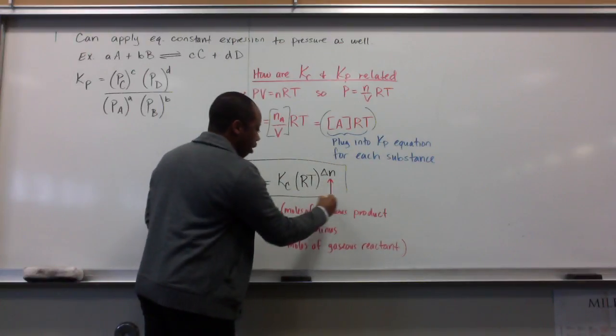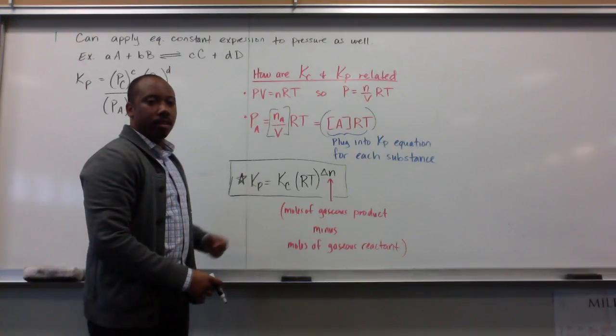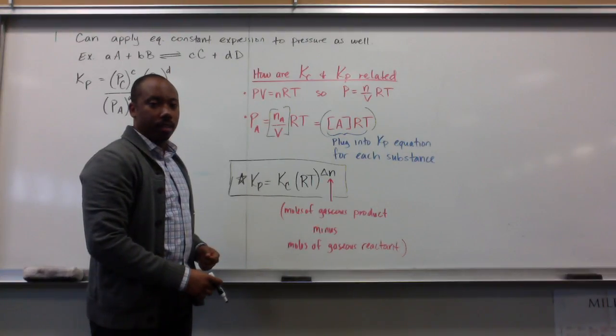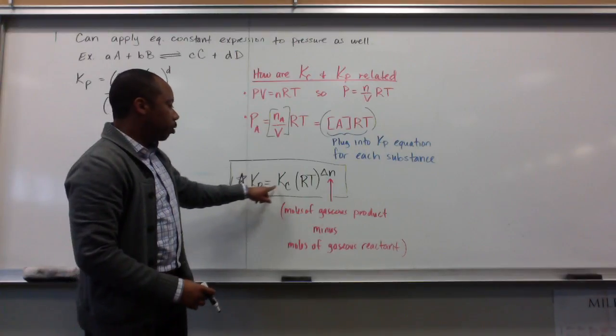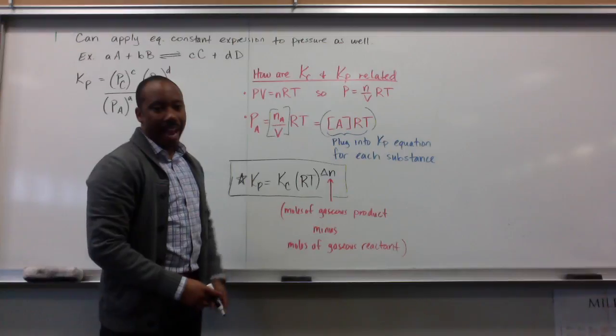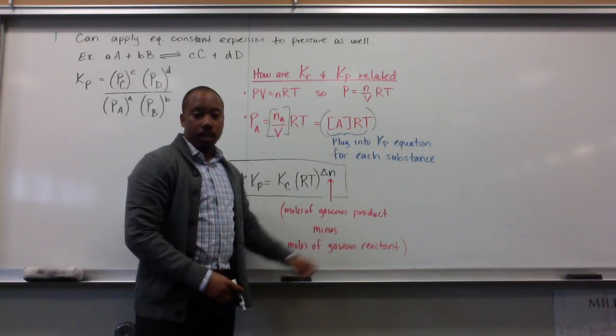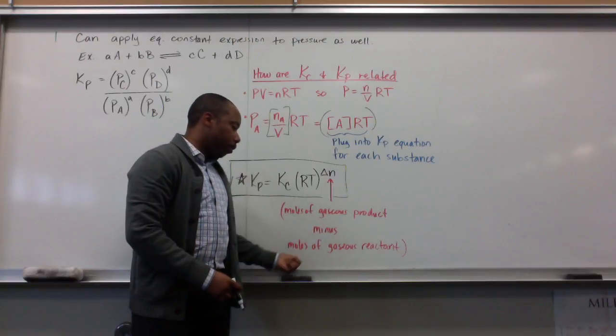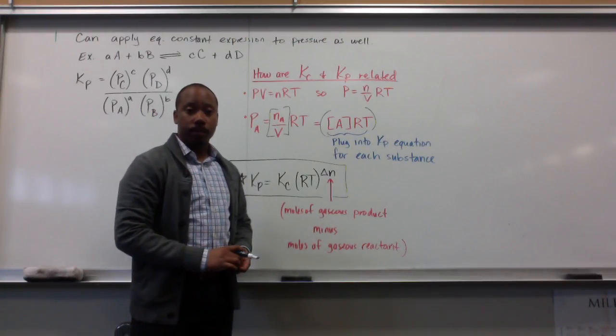And what we get as a result is, you see what I do here. I'm not going to go through that entire derivation with you right now. But, this is what we would get. So, K sub P equals K sub C times RT raised to the power of delta n. And delta n is just the moles of your gaseous product subtract or minus the moles of your gaseous reactant. So, your change in moles.